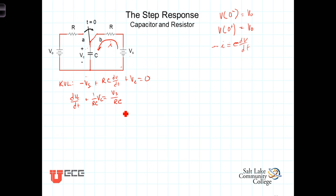The way this differs from our natural response is that in the natural response, the differential terms equal zero, whereas in this case it equals V sub S over RC. That is a result of the fact that there is a voltage source V sub S in this circuit. This first order linear differential equation, non-homogeneous, we're going to solve through separation of variables.